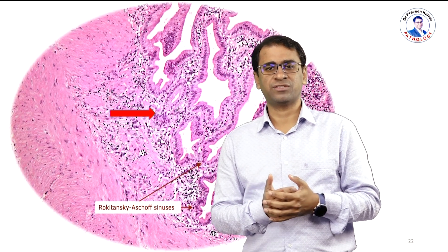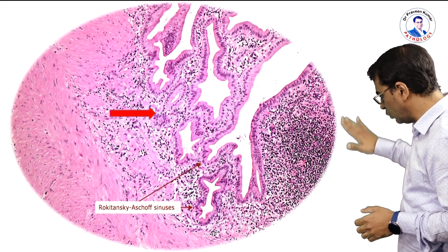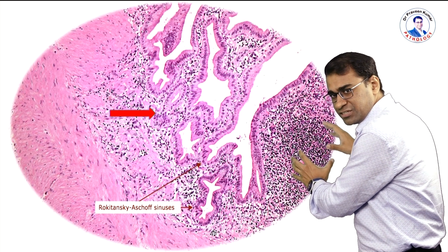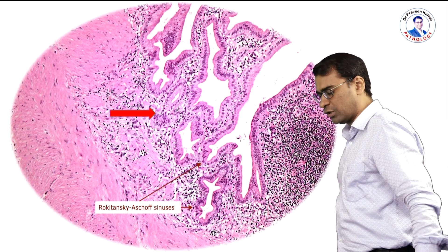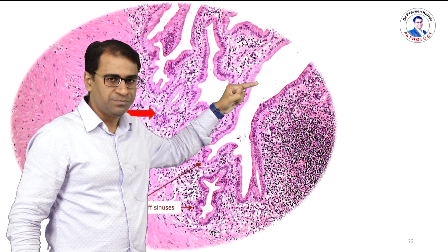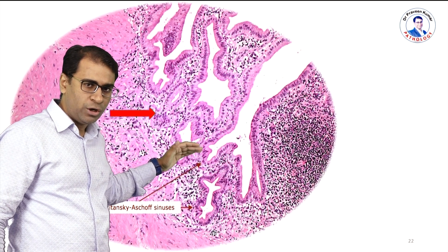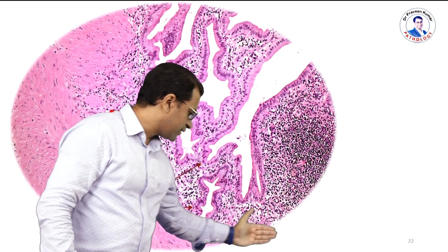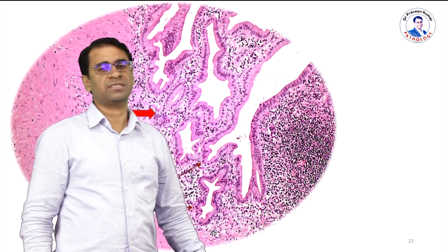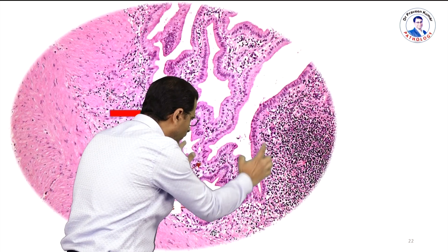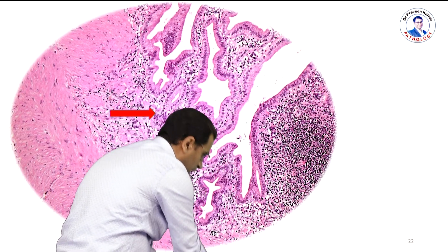When it moves to chronic cholecystitis, what happens? The entire mucosa is infiltrated by a huge number of lymphocytes. This dense lymphocytic infiltration is the key finding of chronic cholecystitis. This is the lining epithelium, and this whole layer here consists of lymphocytes. Because of chronic inflammation, there is often evidence of fibrosis. This fibrosis in the muscle layer pulls the epithelium layer downward, forming cysts.